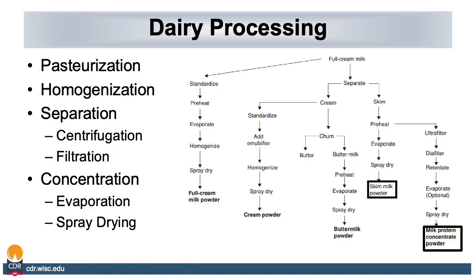During this presentation we will cover the following dairy processes: pasteurization, homogenization, separation, and concentration. All of these are used in the production of dairy ingredients. As you can see, we can take full cream milk and use different processes to create different endpoints such as skim milk powder and milk protein concentrate powder.